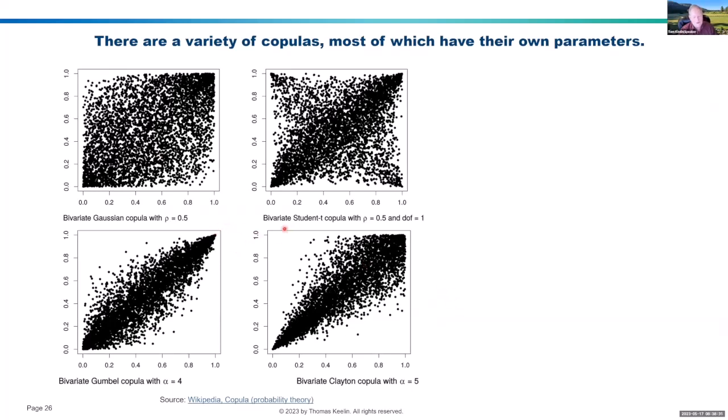This is a bivariate student T copula here, and what they're doing is plotting the Y1 and the Y2 on the unit square. You can see the student T copula is correlated in all four corners. Well, that's not probably right for our example. We've got a so-called Clayton copula here that looks almost like a shotgun pattern going out. The problem is, how do you pick a copula?